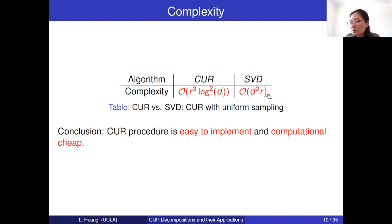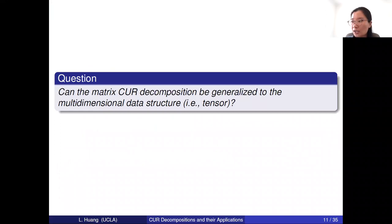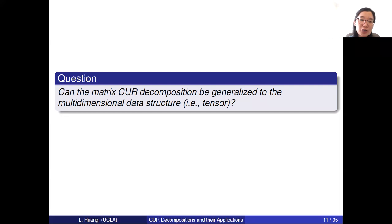Now let's summarize the matrix CUR decomposition. It only uses data from the original matrix itself and is computationally cheap. But for tensor decomposition, most tensor decompositions need to unfold the tensor into a matrix, which is usually computationally expensive. The question is: can we generalize the matrix CUR decomposition to the tensor case? For the matrix CUR decomposition, we used rank information. However, for tensors there are different definitions of rank. If we want to generalize CUR decomposition to the tensor case, we first need to fix the rank definition. In our work, we focus on the multilinear rank.